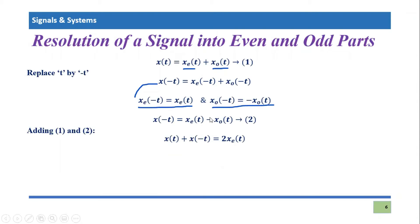two times x_e(t), because x_e(t) from both equations adds up, and the x_o(t) and -x_o(t) terms cancel out. So this equation gets simplified.